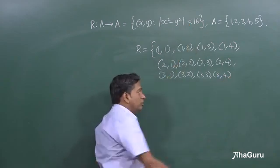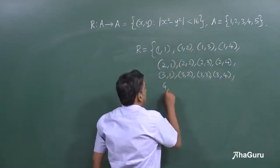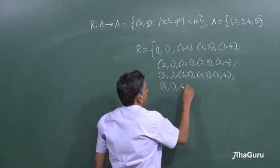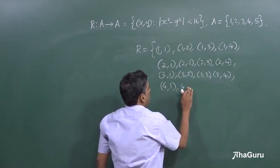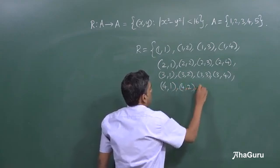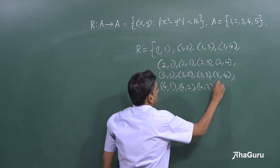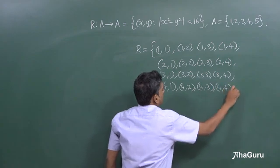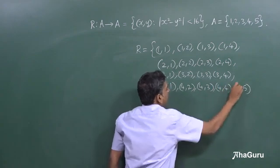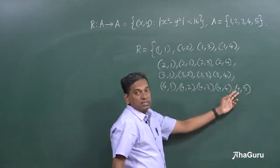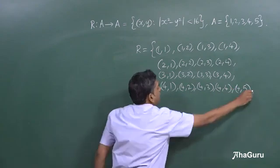So 3 comma 5 will also not satisfy and then 4 comma 1, 4 comma 2, 4 comma 3, 4 comma 4 and 4 comma 5 also. Why? Because 25 minus 16 is 9.